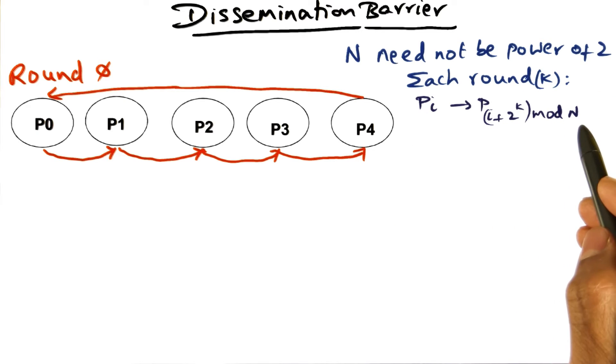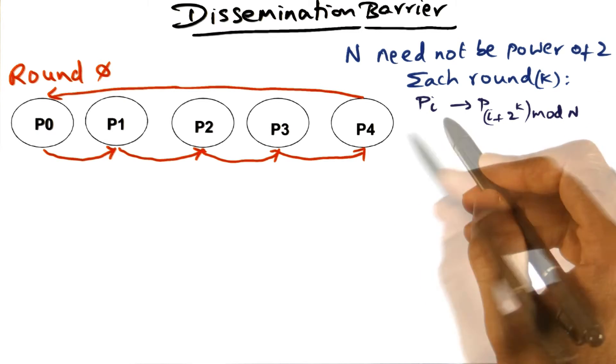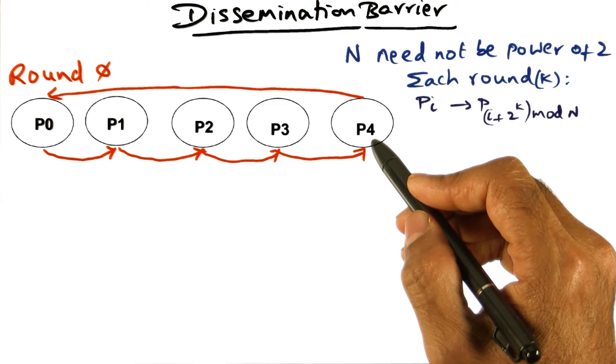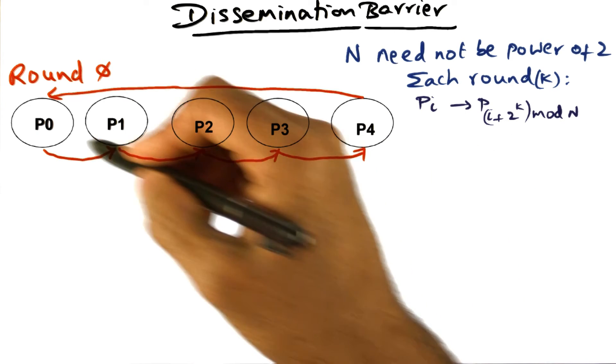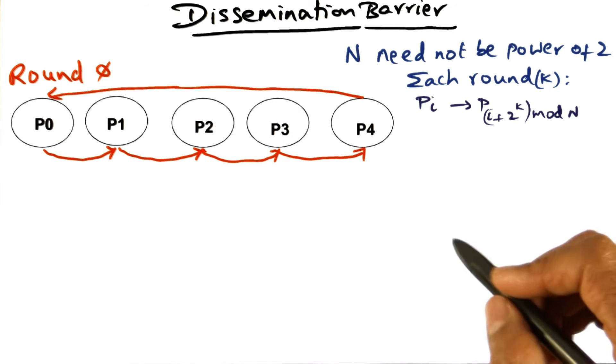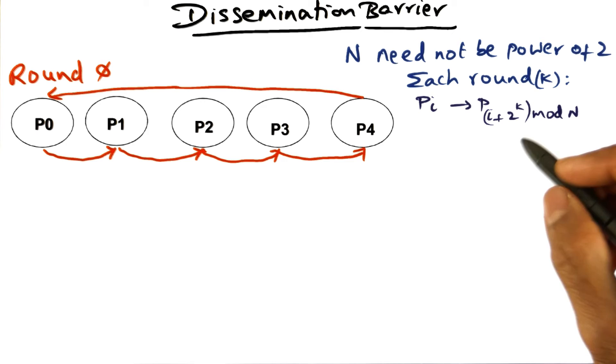In this case, since it is a mod function that we're using, p4 is going to be sending its message to processor p5 mod n, n being five, so it'll be sending the message to p0. So this is round zero of the communication.